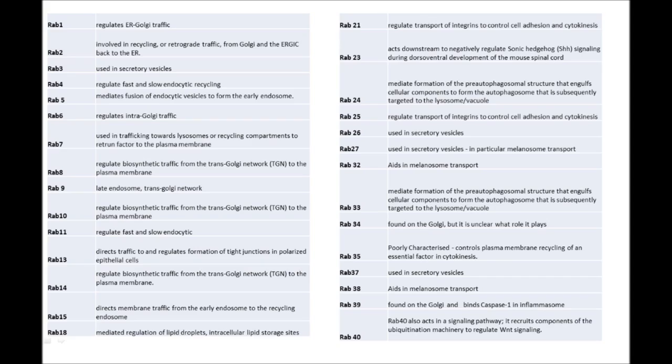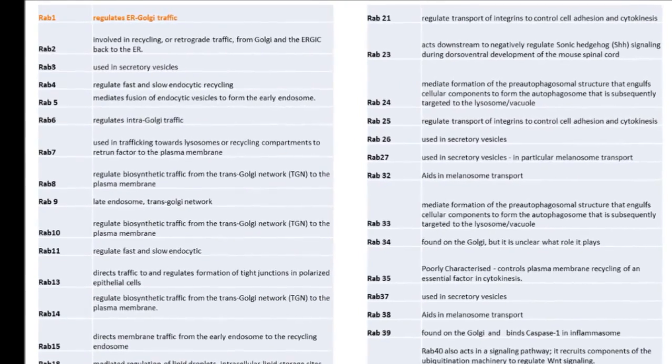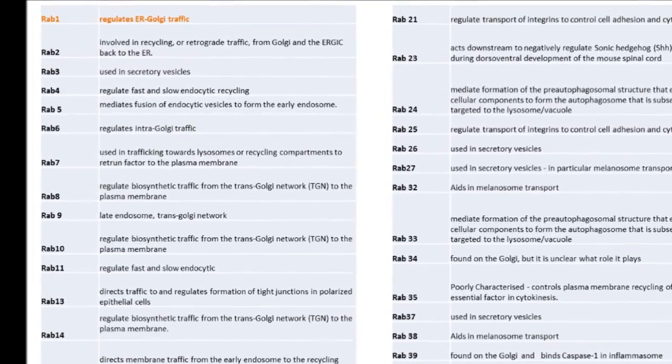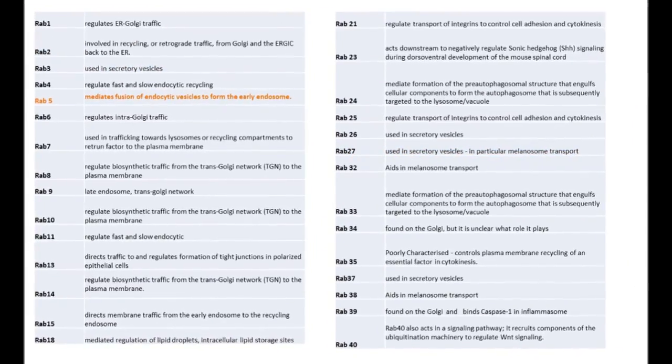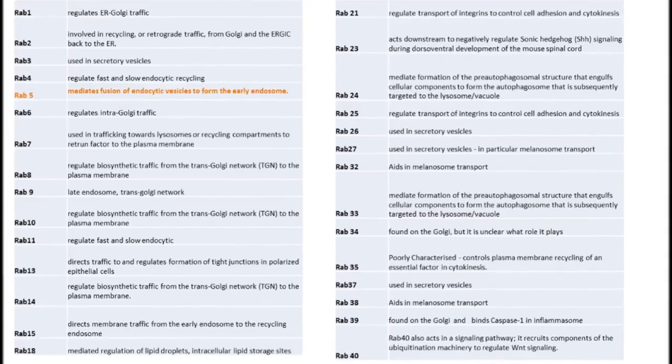For example, RAB1 is involved in the movement of membranes from the ER through the Golgi. RAB3 and 27 regulates secretory vesicle release, and RAB5 mediates movement to the early endosome.